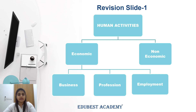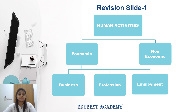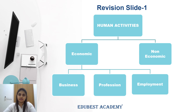Economic activities are divided into three parts: business, profession, and employment. Business is an economic activity involving production, purchase and sale of goods and supply of services, with the main objective to earn profit. Profession requires special skill and special knowledge, and in return they get fees. Employment is an economic activity performed for others, and in return they get remuneration.